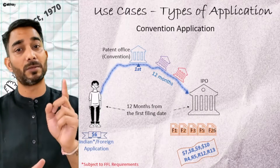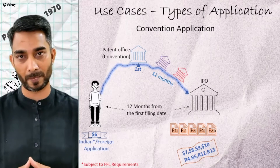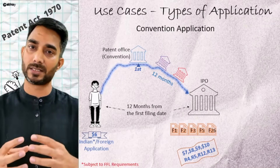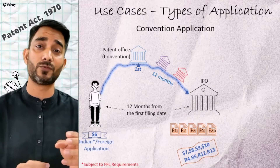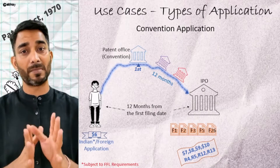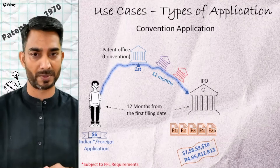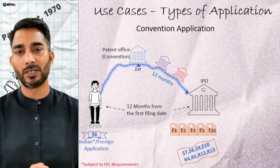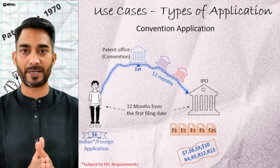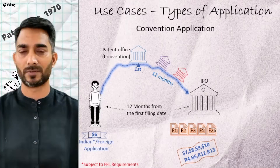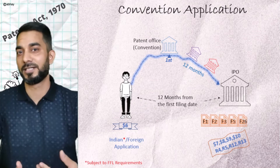Taking an example: an application was filed in a convention country — the member country that was the first to receive an application for the idea. The person now wants to enter the Indian Patent Office, so it has to happen within 12 months from the date on which it was filed in that member country. It could be filed in one country or multiple countries, but all of this has to be completed within 12 months. The forms remain the same whether it is an ordinary or a conventional application.